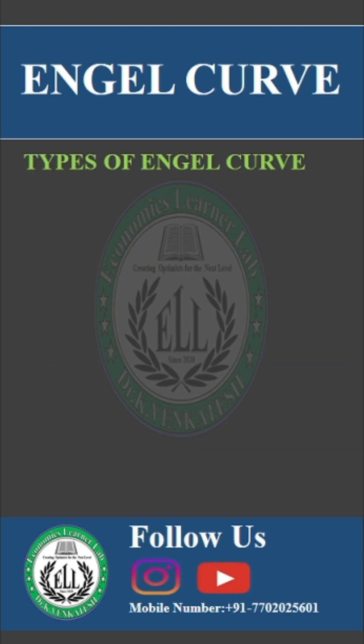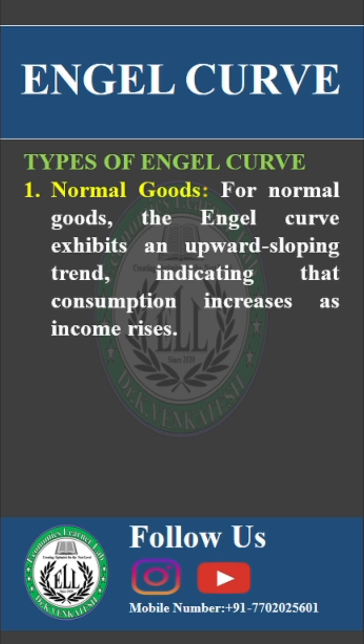Types of Engel curves vary with the characteristics of goods. The first one is normal goods — the Engel curve slopes upward, indicating that consumption increases as income rises.